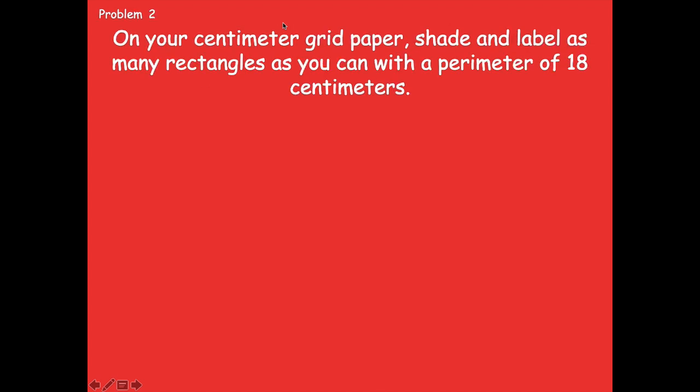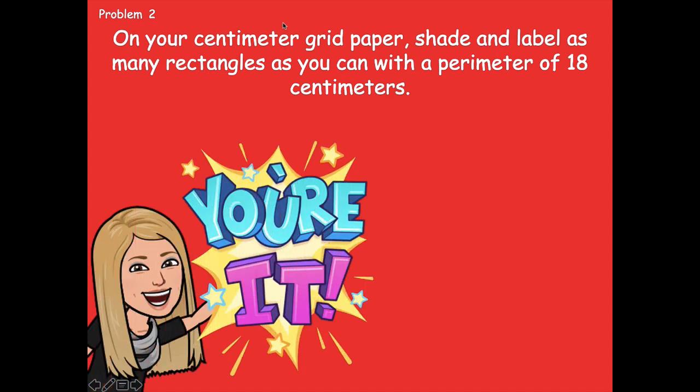Now you're going to do problem two on your own, then come back and check in with me. Problem two says: on your centimeter grid paper, shade and label as many rectangles as you can with a perimeter of 18 centimeters. It's the same thing we just did in problem one — just a new perimeter of 18 centimeters. Pause the video, solve both parts of problem two, and click play when you're ready to go over it together.